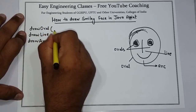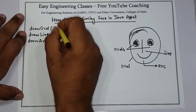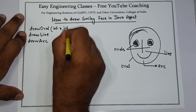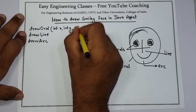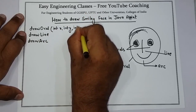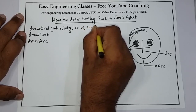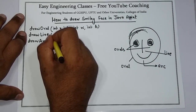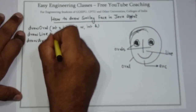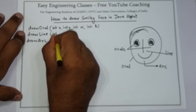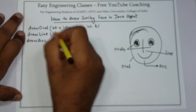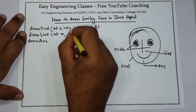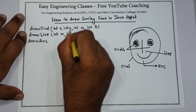The arguments of drawOval are: int x, int y, then width and height. For drawLine, the arguments are coordinates: int x1, int y1, int x2, and int y2.